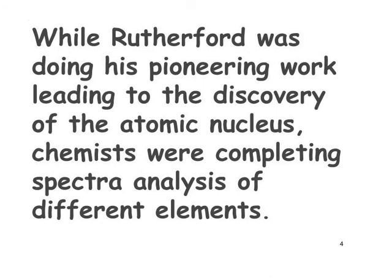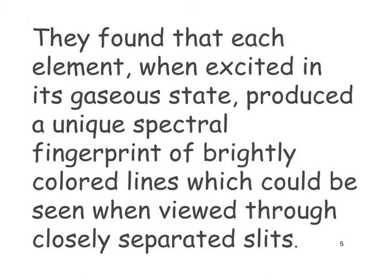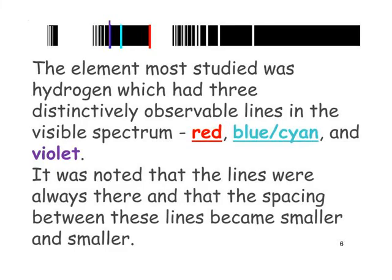While Rutherford was doing his pioneering work leading to the discovery of the atomic nucleus, chemists at the turn of the 20th century were completing spectral analysis of different elements. They found that each element, when excited in its gaseous state, produced a unique spectral fingerprint of brightly coloured lines visible through closely separated slits. The element most studied was hydrogen, which had three distinctively observable lines in the visible spectrum: the red, blue-cyan, and violet.